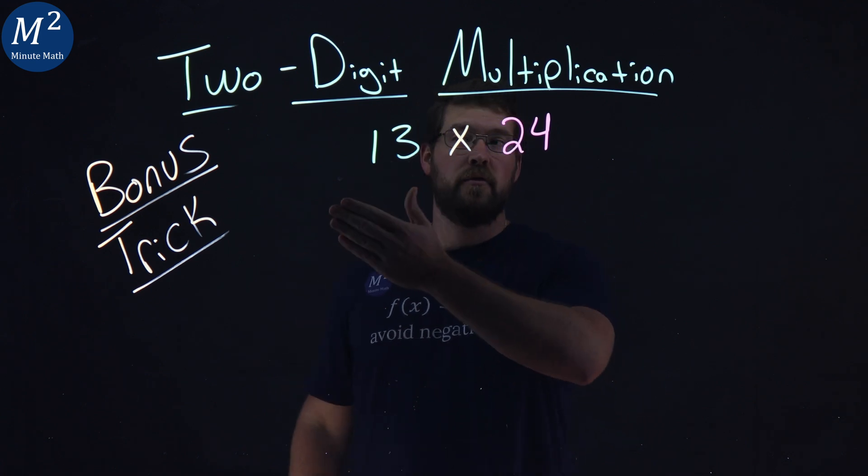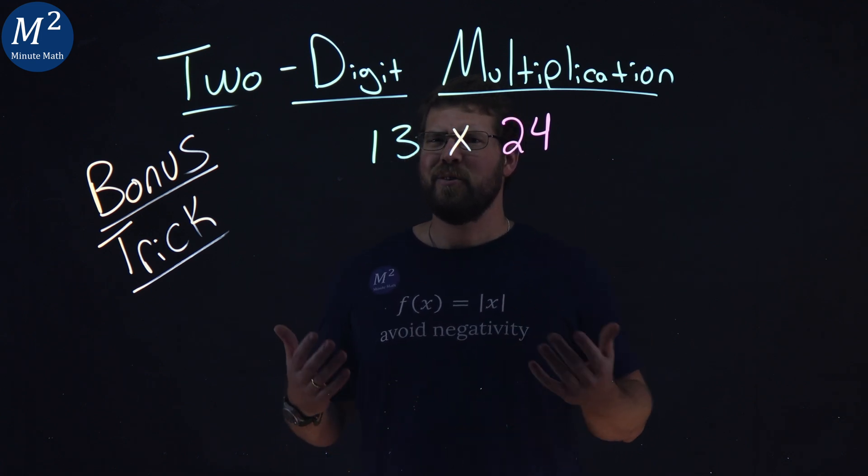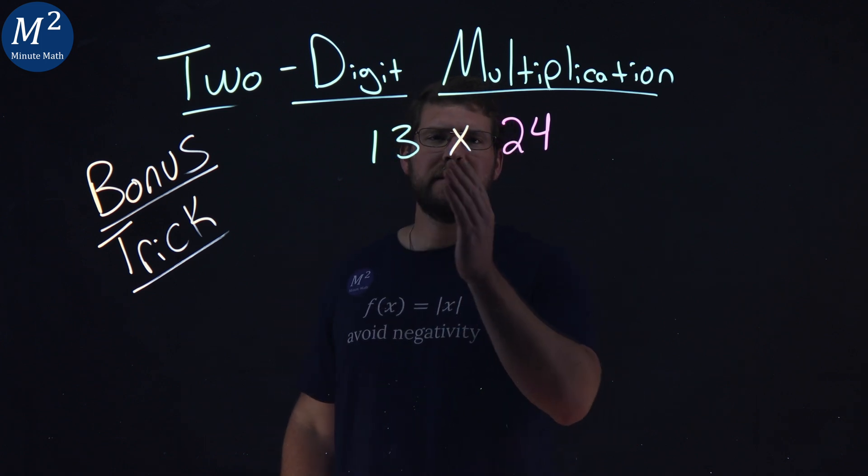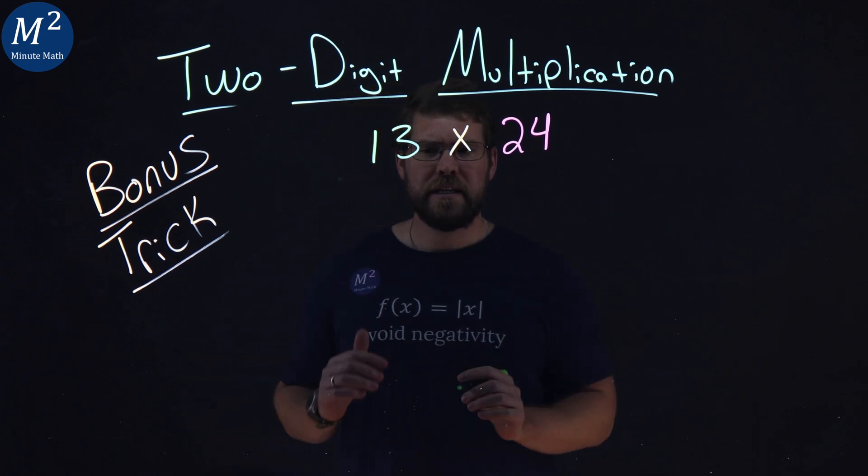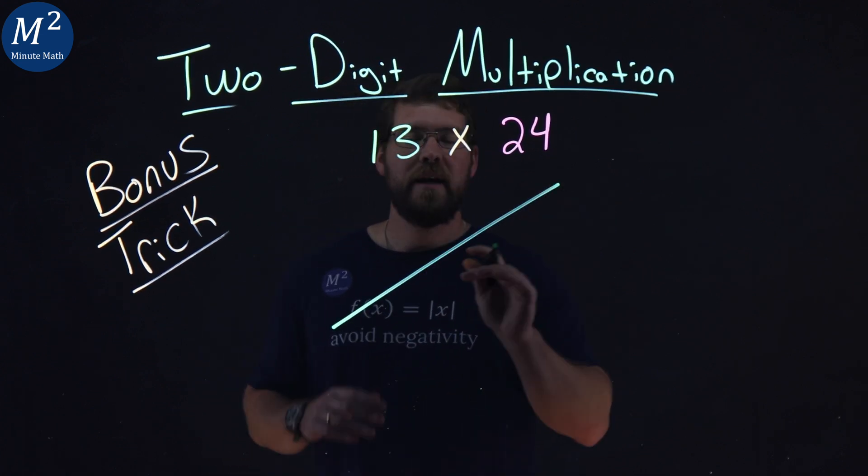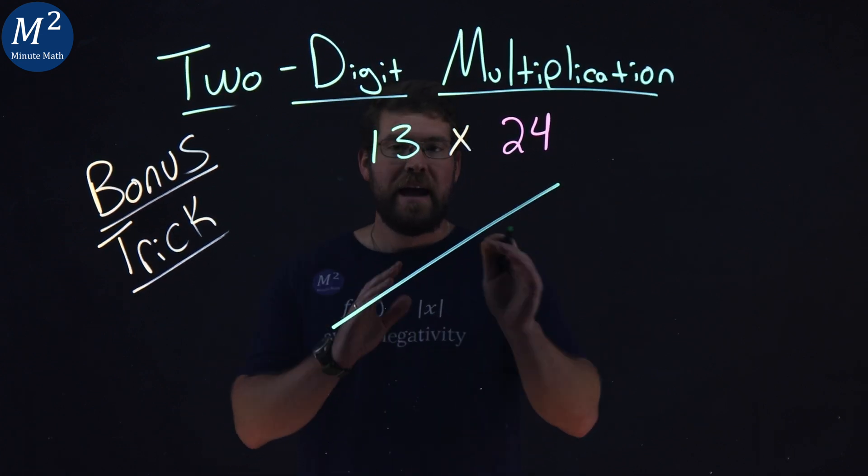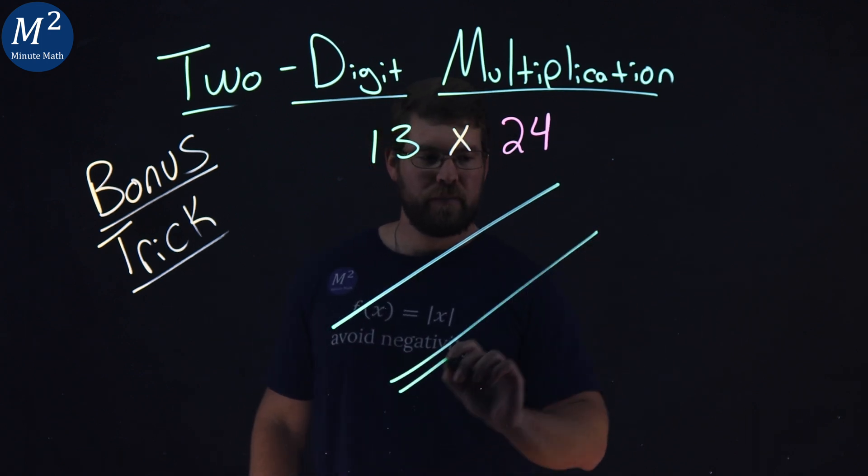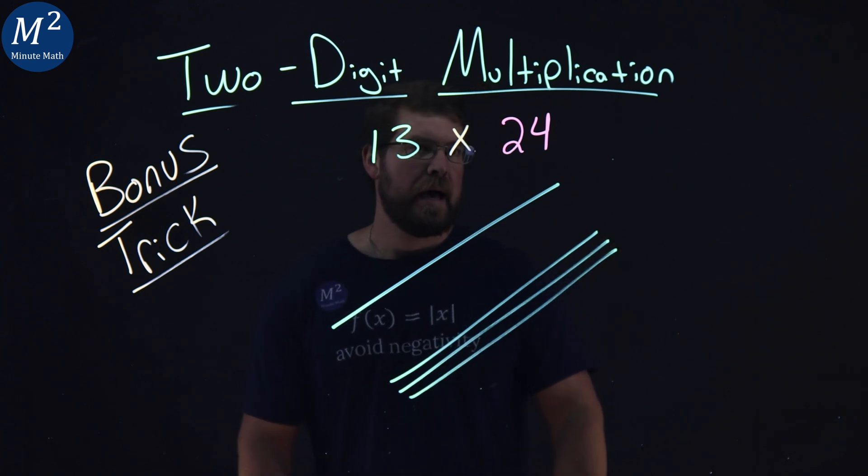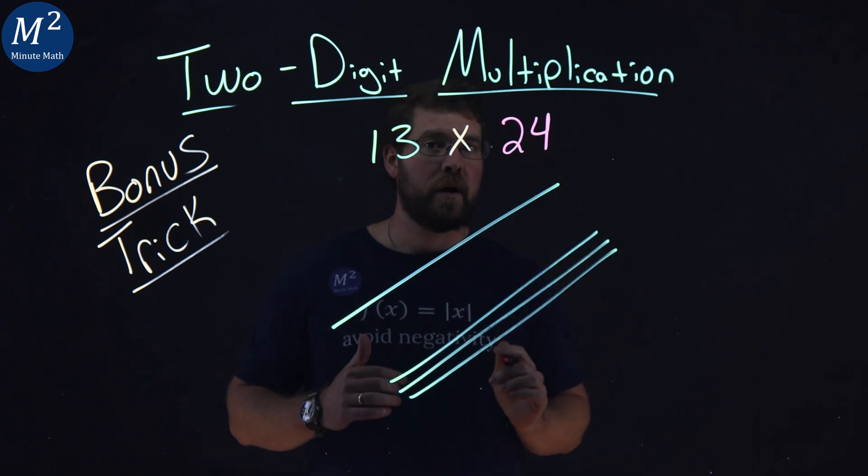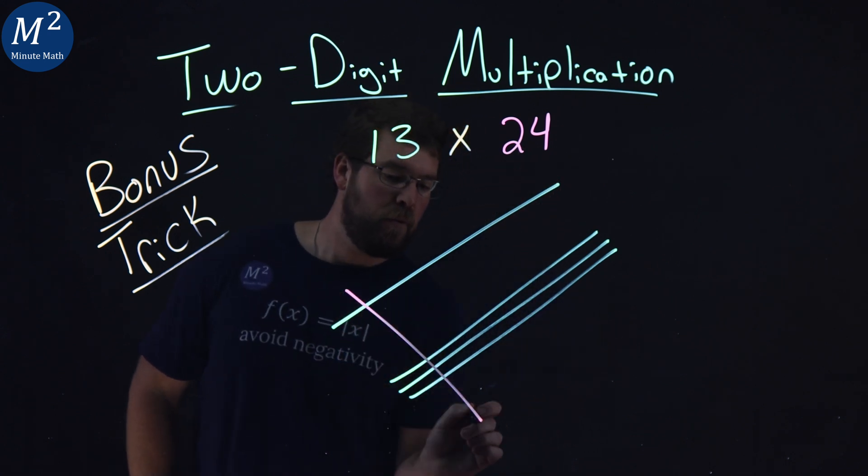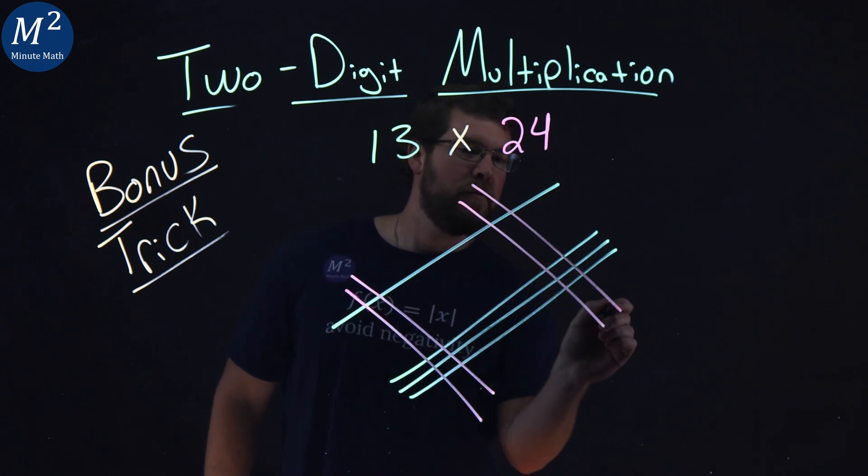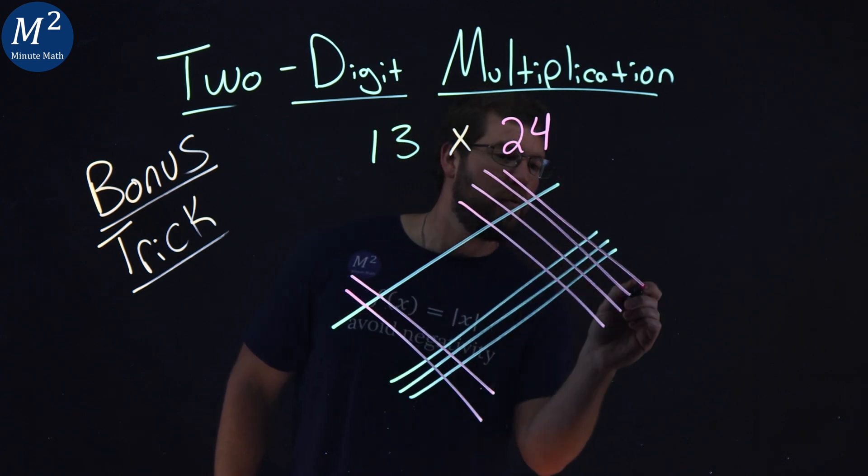Now you've learned how to multiply two-digit numbers by grouping. Let's learn a bonus trick. This method is using lines. We have 13 times 24. 13. I'm going to take one line right here for the tens place, and then I'm going to give it a space here diagonally, and have three for the ones place. 1, 2, 3. I'm now going to do the same thing with 24. Tens place is 2. 1, 2, and then a 4 here on the ones place. 1, 2, 3, 4.